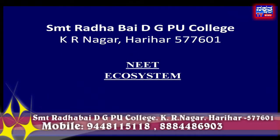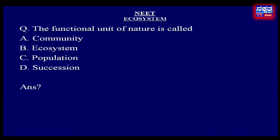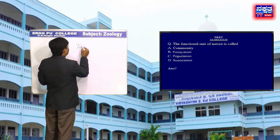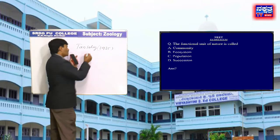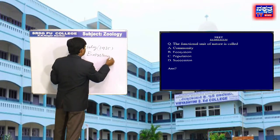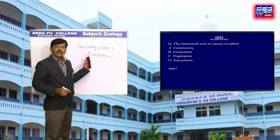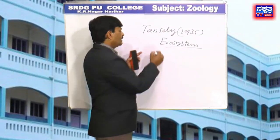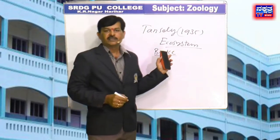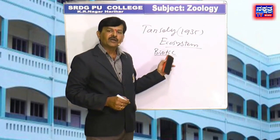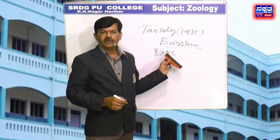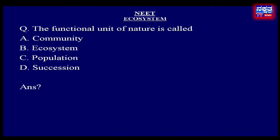The first question on this chapter is: The functional unit of nature is called — Option A: Community, B: Ecosystem, C: Population, D: Succession. Tansley in 1935 coined the term ecosystem to recognize the interactions of the biotic communities and its physical environment as a fundamental unit of ecology or nature. Therefore, in the given options, B — Ecosystem — is the right answer.